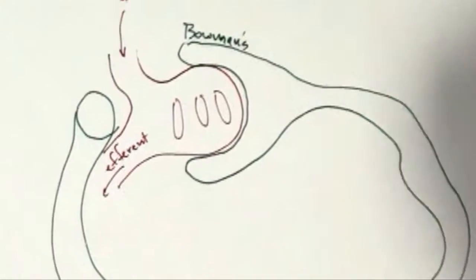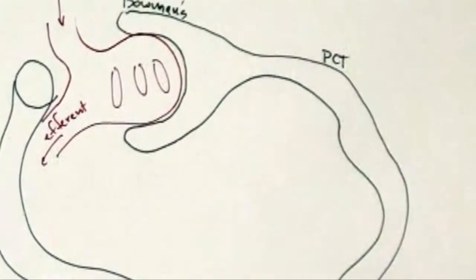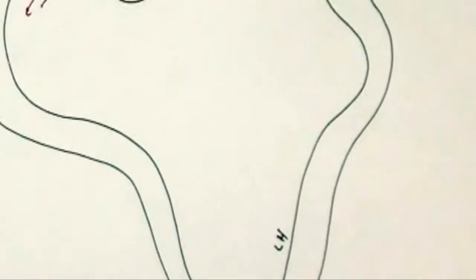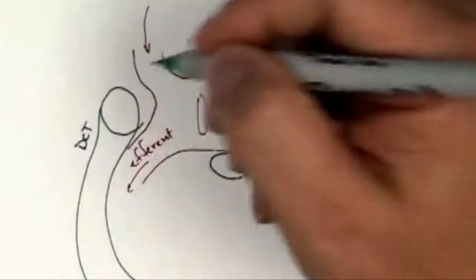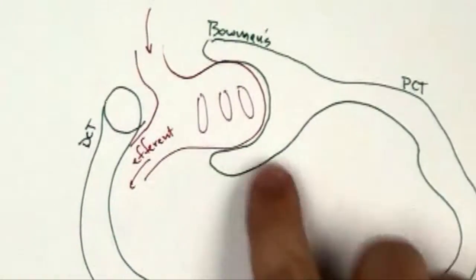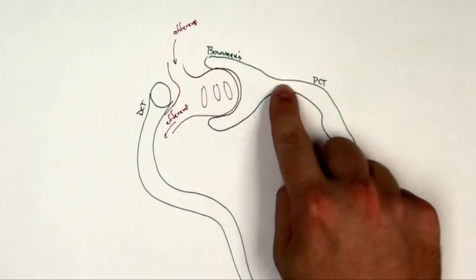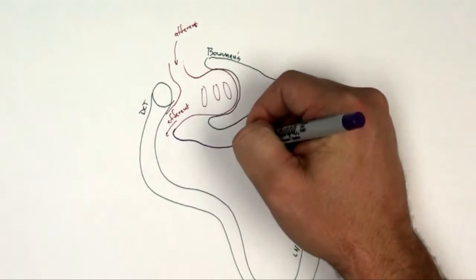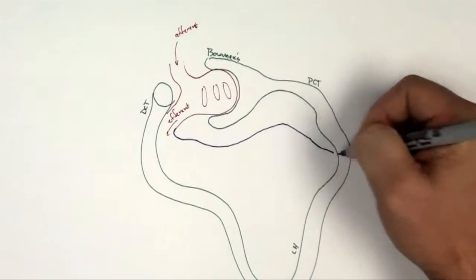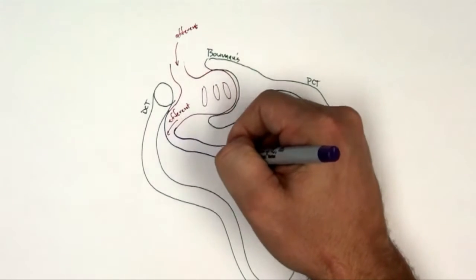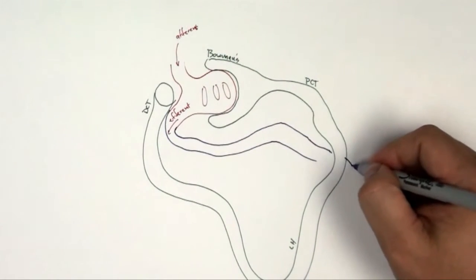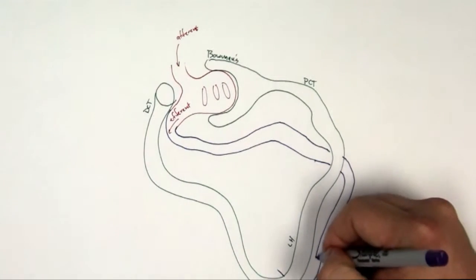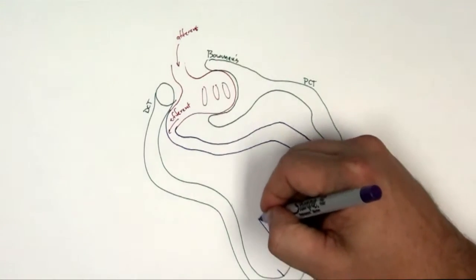Bowman's capsule basically captures the filtrate in the first place. So we've got the proximal convoluted tubule. It connects back to the loop of Henle. This over here is called a distal convoluted tubule. One of the things we're going to talk about is filtrate goes across here and then we got to get that back into the blood. So the way we get that back into the blood is the efferent actually gives rise to another set of capillaries. I'm going to draw it winding around.